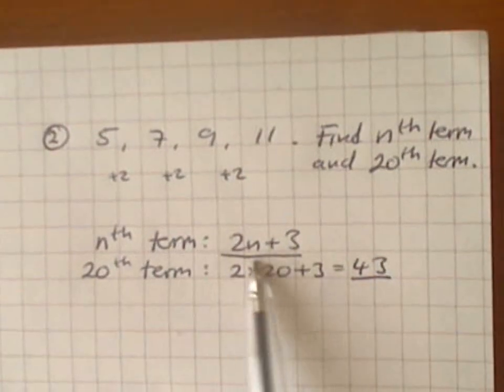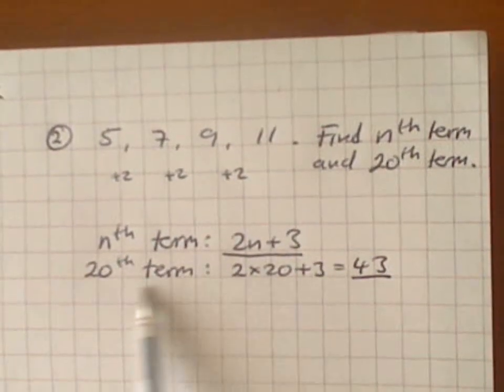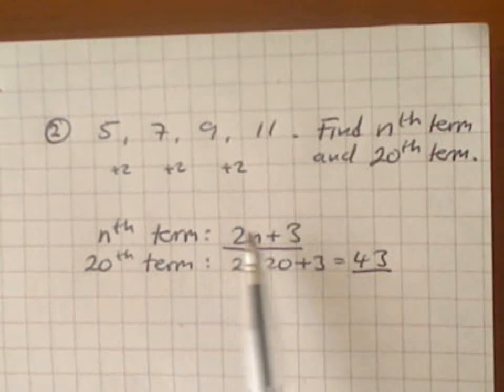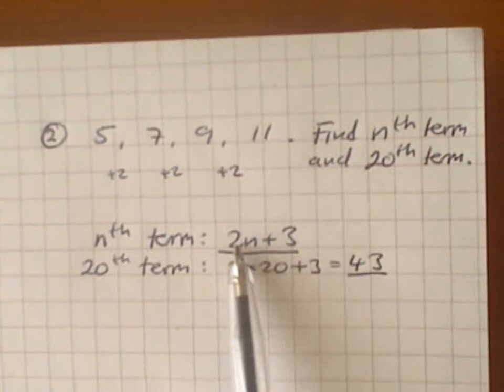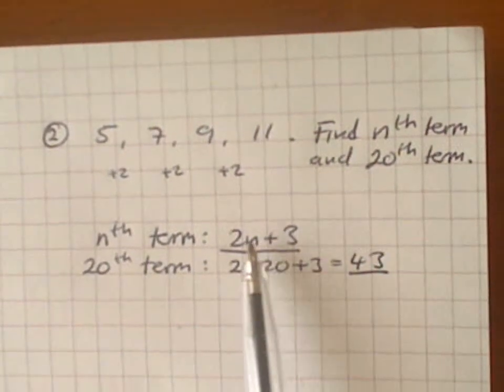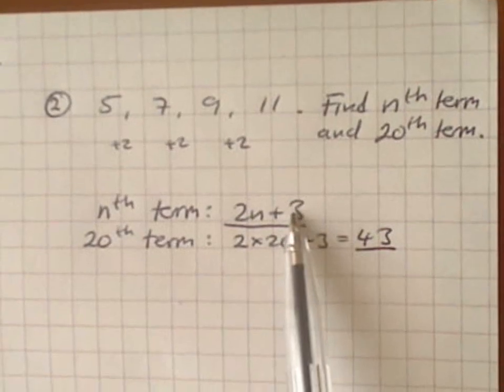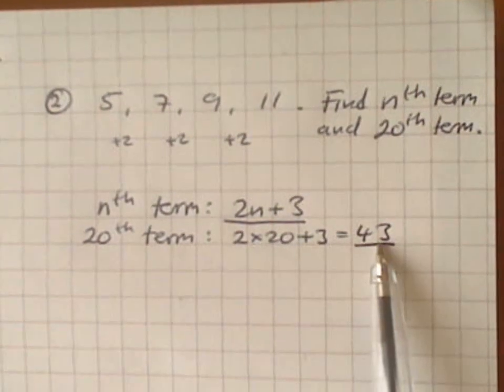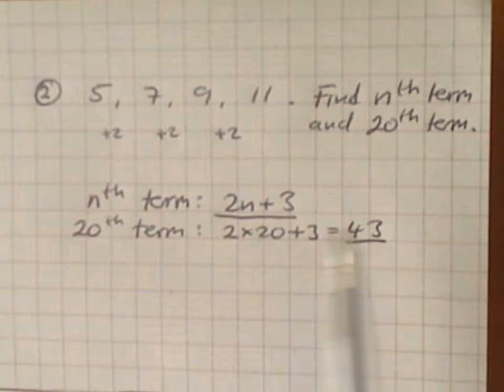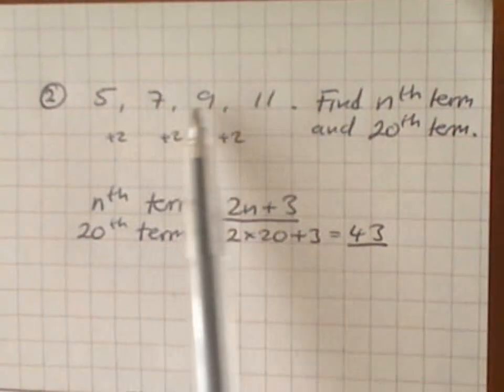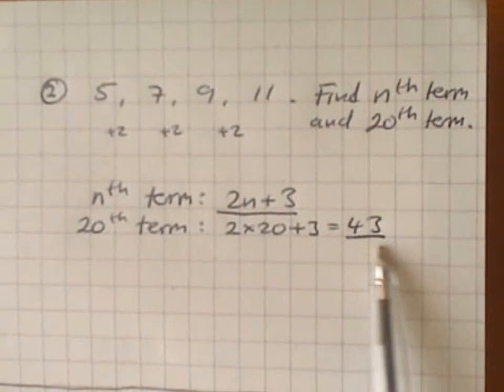What about the twentieth term? Well, you work out the twentieth term from the nth term. I say two times twenty, because I want to know the twentieth term. Two times twenty plus three equals forty-three. The twentieth term in this pattern, five, seven, nine, eleven, is forty-three.